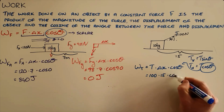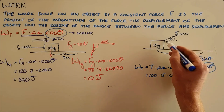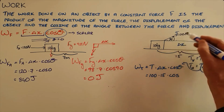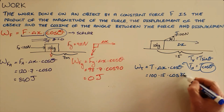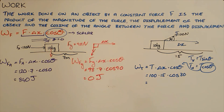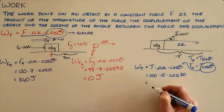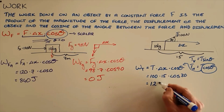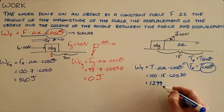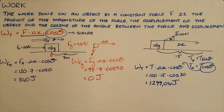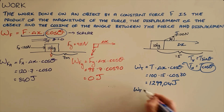Substituting in the tension force of 100 newtons, a displacement of 15 meters, and the angle of 30 degrees — since the object is displaced to the right and the force is 30 degrees upward from that — we calculate the total work done as 1299.04 joules.